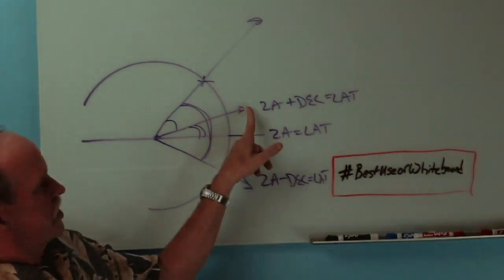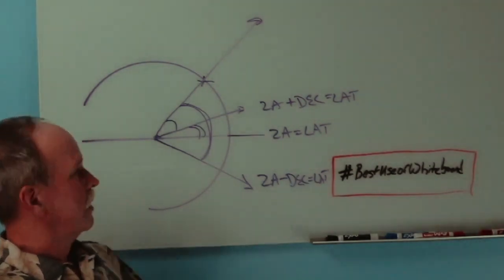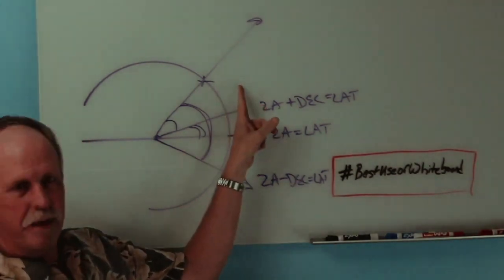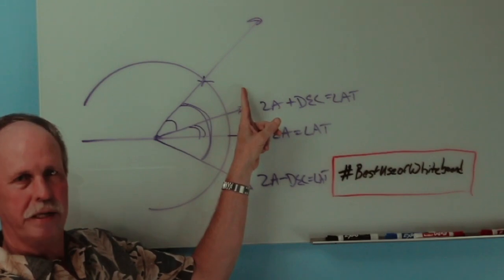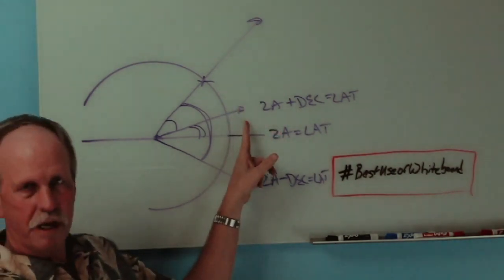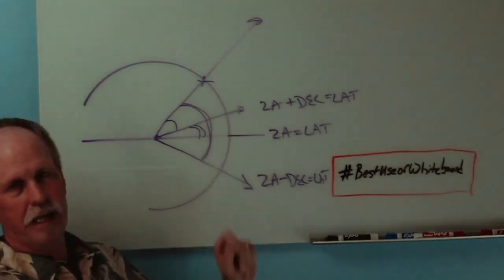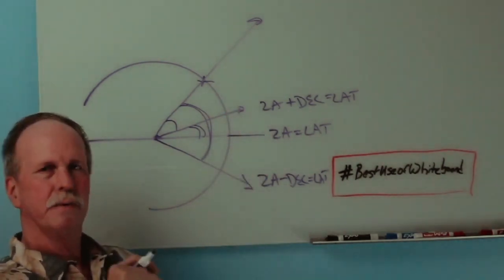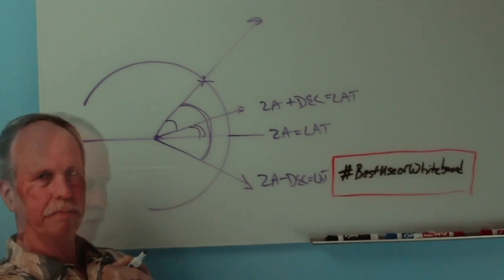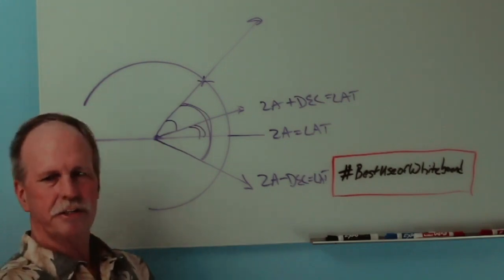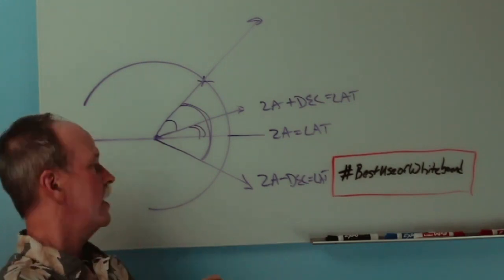My zenith angle that I measured was about 15 degrees. The declination was also about 15 degrees. So you add them together and you found that my latitude was approximately 30 degrees. Now here's an interesting situation that I'm going to let you try and figure out.